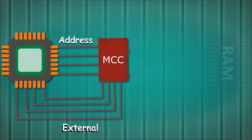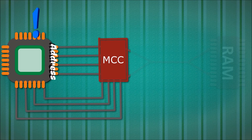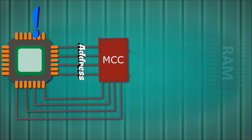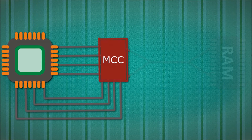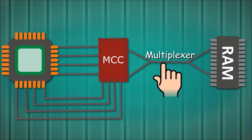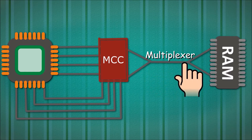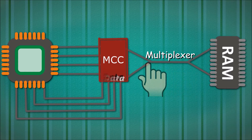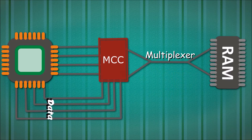The address and the external data bus connect the memory controller to the CPU. When information is needed, the CPU sends a request to the MCC. This request contains the location for the needed information currently stored in DRAM. The MCC, which is connected to the DRAM by a multiplexer, locates the information and sends it back to the CPU.